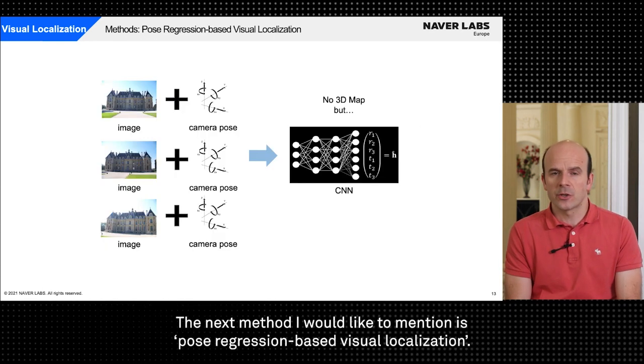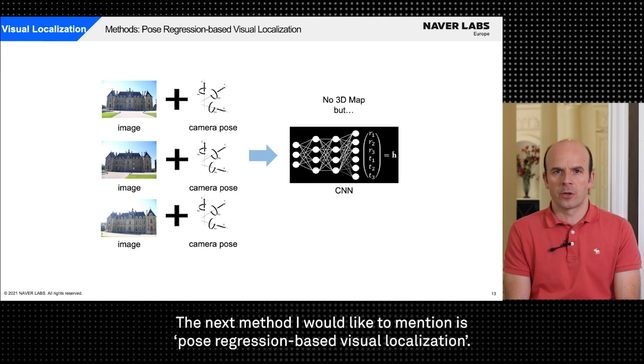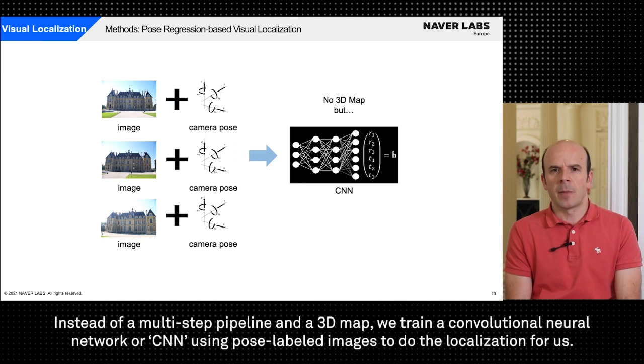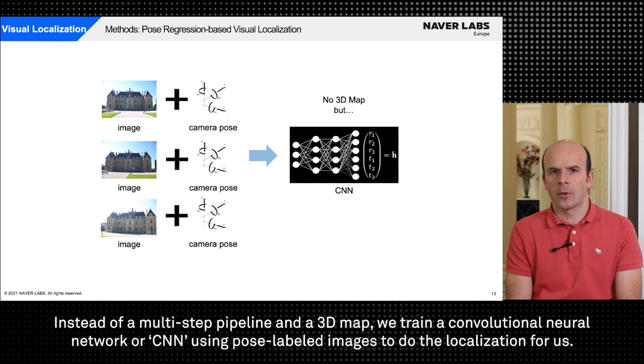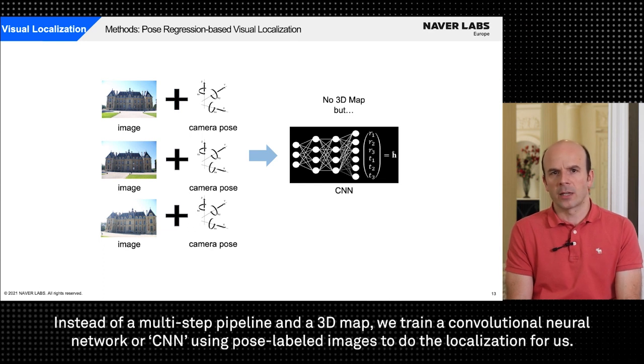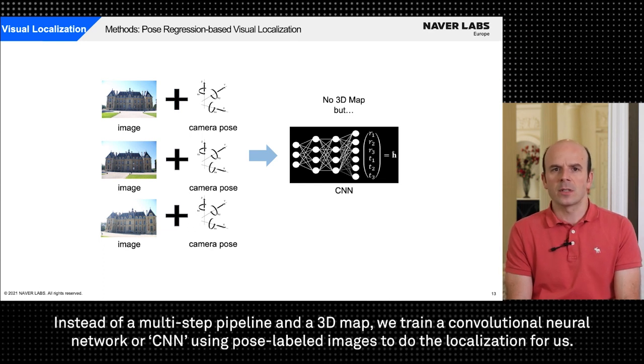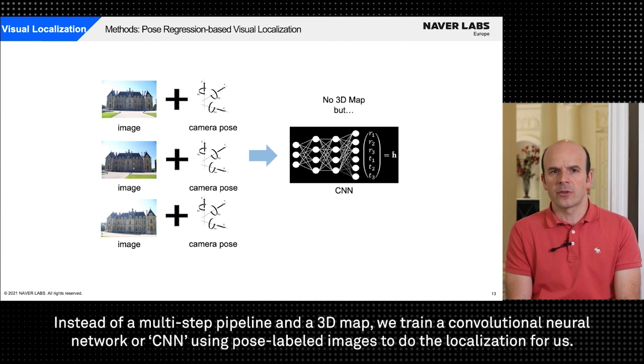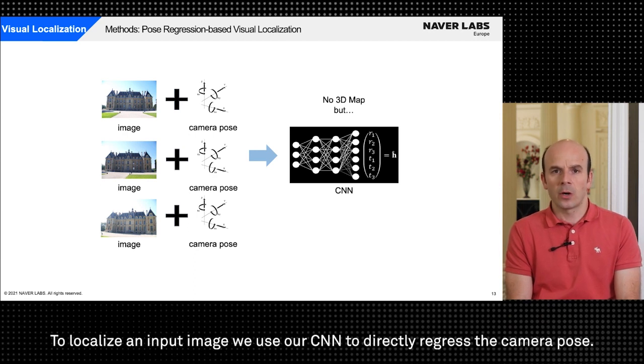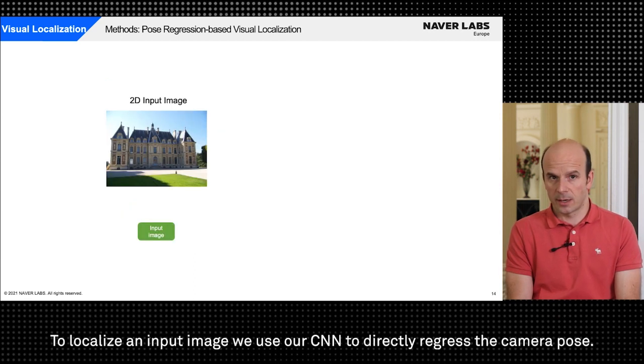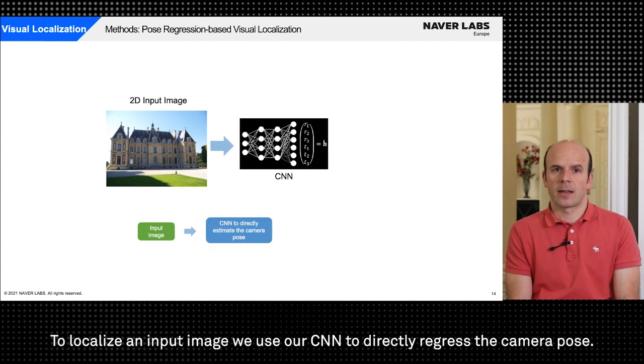The next method I would like to mention is pose regression based visual localization. Instead of a multi-step pipeline and a 3D map we train a convolutional neural network or CNN using pose labeled images to do the localization for us. To localize an input image we use our CNN to directly regress the camera pose.